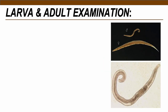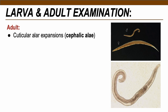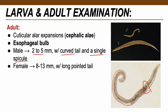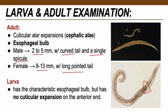Larvae of Enterobius vermicularis are very similar to adults but smaller. Adult worms contain cuticular alae expansions called cephalic alae and have an esophageal bulb connected to the esophagus — very evident in Enterobius adults. Males are relatively smaller with a curved tail and a single spicule for copulation. Females range 8–13 millimeters with a long pointed tail. Larvae have no cuticular expansion, distinguishing them from adults.